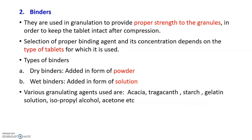The second important excipient is binders. They are used in granulation to provide proper strength to granules — bringing particles together and adhering them to form granules, in order to keep the tablet intact during compression. The selection of a proper binding agent and its concentration depends on the type of tablet. Dry binders are added in the form of powder; wet binders are added in the form of solution — dissolved in a solvent or vehicle and used as a solution.